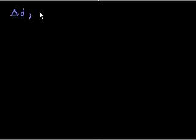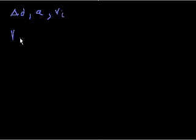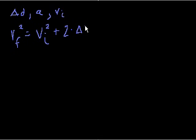In the last video, I said that we start off with the change in distance — that's what we're given, along with the acceleration and the initial velocity. I asked you how we figure out what the final velocity is. We derived the formula that vf squared, the final velocity squared, is equal to the initial velocity squared plus 2 times the change in distance. You'll sometimes see this written as 2 times distance, because we assume the initial distance is at zero, so the change in distance would just be the final distance.